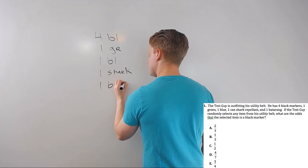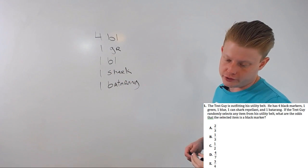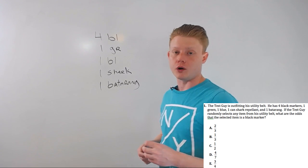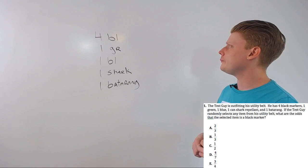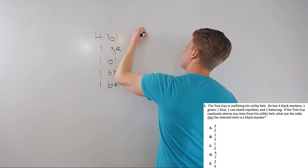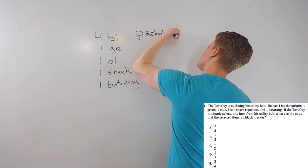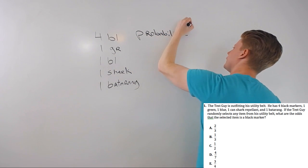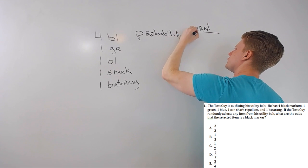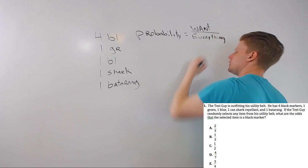What are the likelihoods if I select something randomly—say, a black marker? Probability is always calculated this way: probability is what you want, or what you're interested in, over everything.